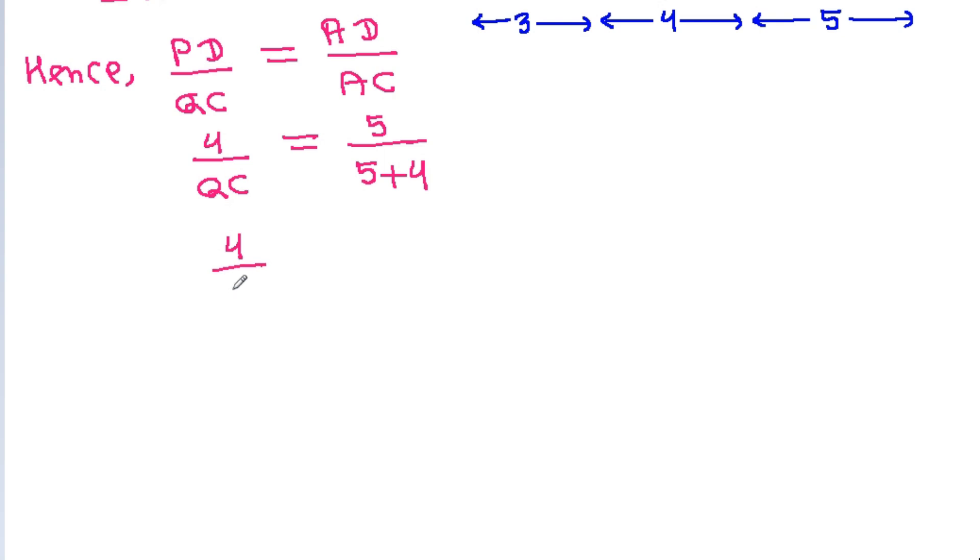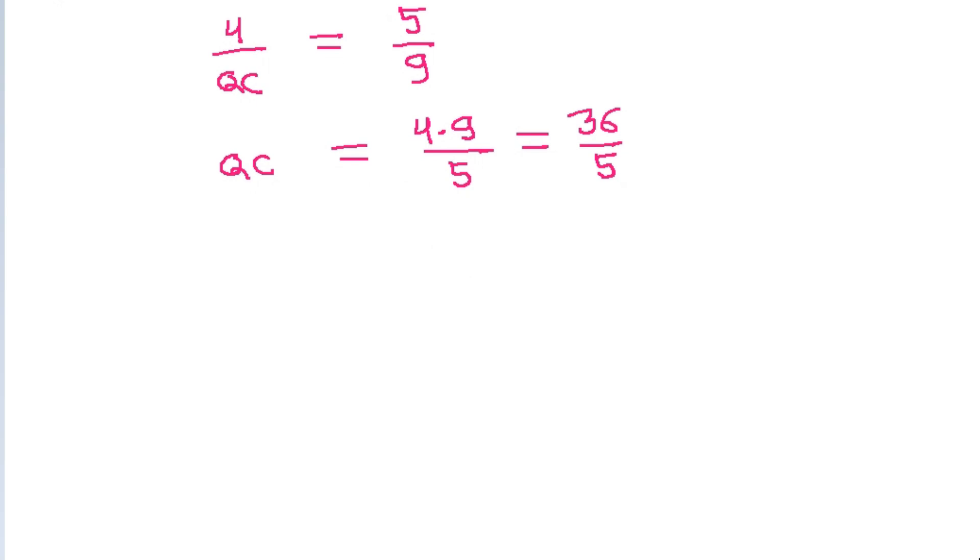So 4 by QC equals 5 by 9. Therefore QC will be equal to 4 times 9 by 5, that is equal to 36 by 5.